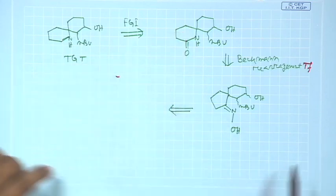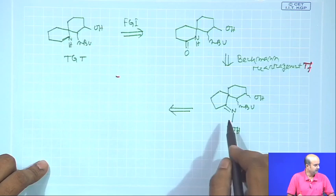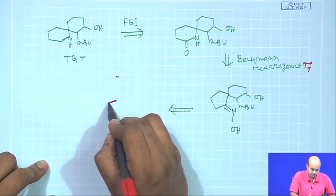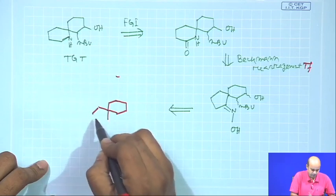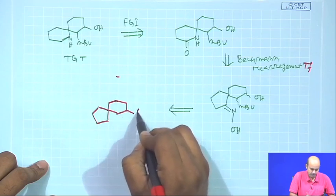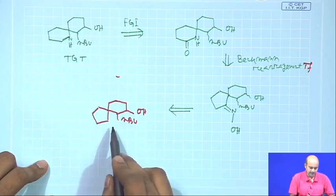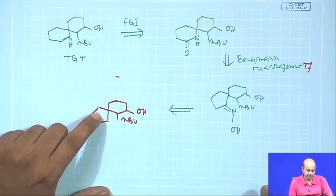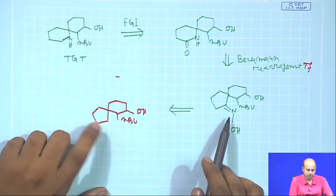So if you have a 5-membered oxime, that will undergo a ring expansion to give you a 6-membered amide. Now, how you can make this oxime - next will be a very interesting reaction which we need to spend some time on. We have an OH here and an N-butyl here. If I draw an intermediate something like this, you can see that this left-hand ring is absolutely unfunctionalized. Then how are you planning to introduce an oxime or a keto group into this?